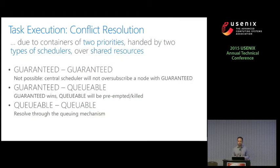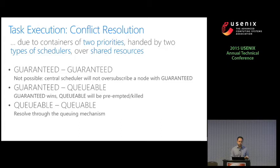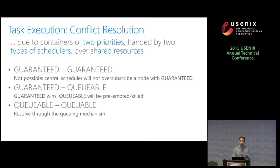Of course, there can be conflicts due to having containers of two different types handled by two different schedulers but over the same resources. When there is a conflict between two guaranteed containers, there cannot actually be a conflict, because the central scheduler will never oversubscribe a node with guaranteed containers. When there is a conflict between a guaranteed and a queueable container, the guaranteed container always wins as it has higher priority, and the queueable container will be preempted or killed. When there are two queueable containers, conflicts are resolved through the queuing mechanism.